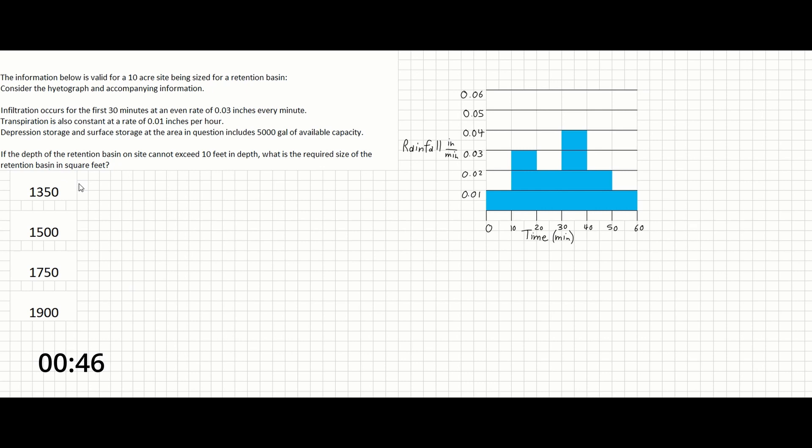So this problem gives us a hietograph showing the rainfall per minute over 10-minute increments leading up to an hour. We are given the size of the site and a number of other hydrologic things that are occurring here.